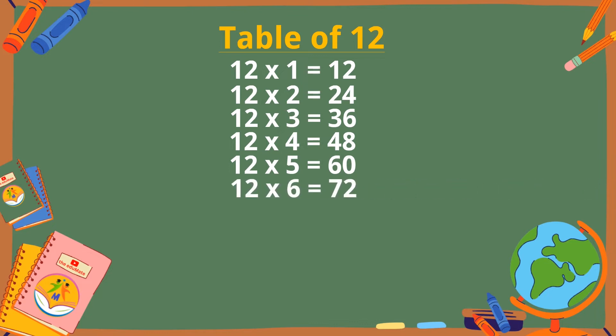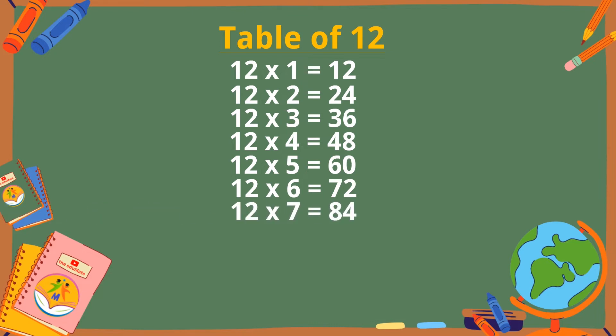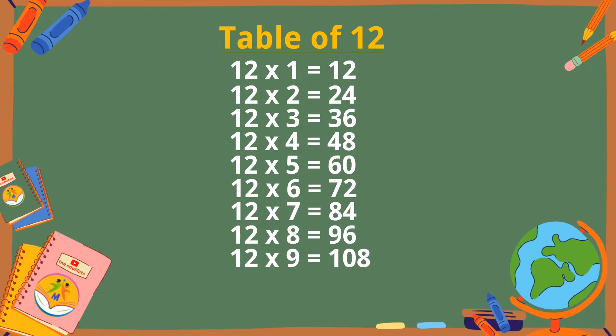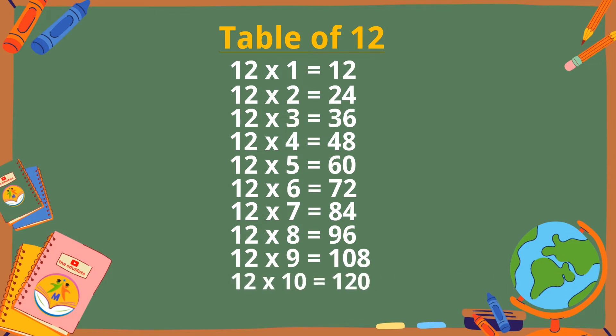12 sixes are 72. 12 sevens are 84. 12 eights are 96. 12 nines are 108. 12 tens are 120.